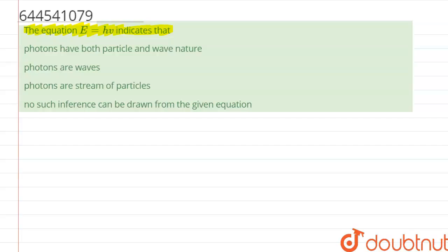So let us start this question. Basically, Planck stated Planck's law, that E is directly proportional to nu. This assumption was made by considering that photons have both kinds of nature.